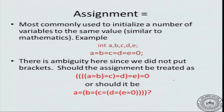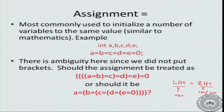The basic rule of assignment is left hand side equals right hand side. The left hand side is some value that can be assigned to — for example, a variable. The right hand side can be anything: a variable, constant, or an expression. So a equals 0 is a valid assignment, but 0 equals a is not. The assignment operation is evaluated right to left.